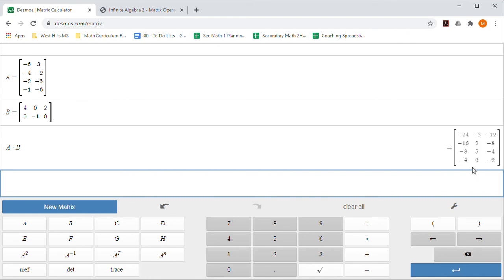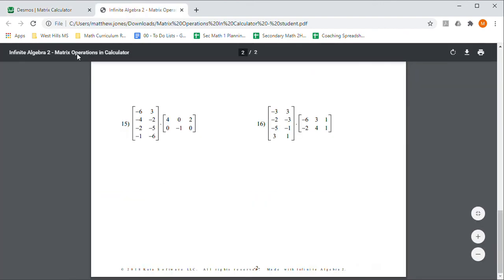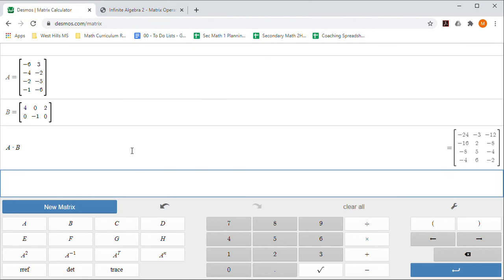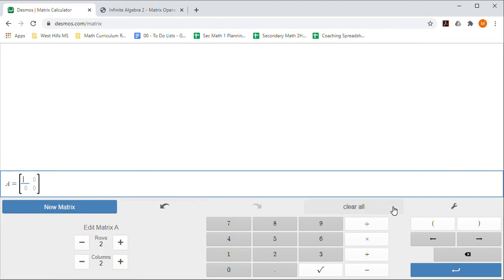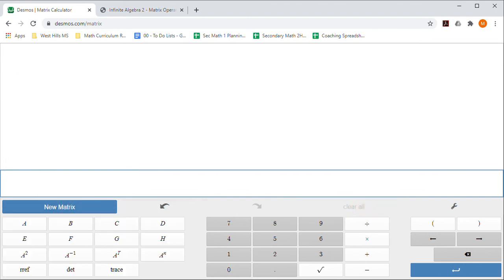That's what you're going to write down on your paper here with all these numbers. So hopefully that gives you an idea of how this works. Once again, when you get to the next one just hit clear all, you can clear it and you can start entering new matrices. There you go, good luck.